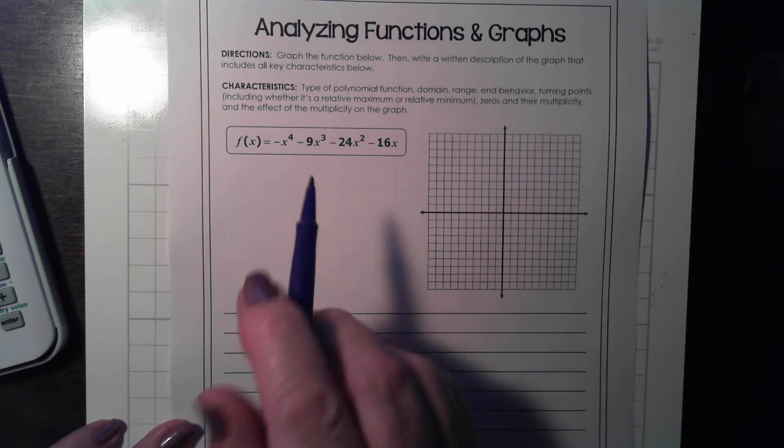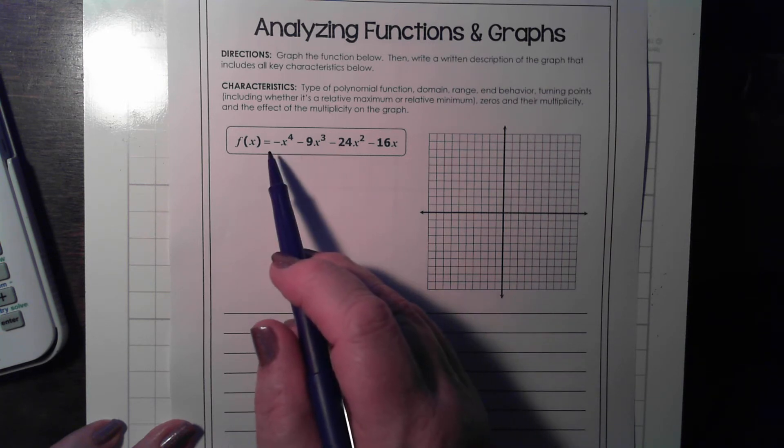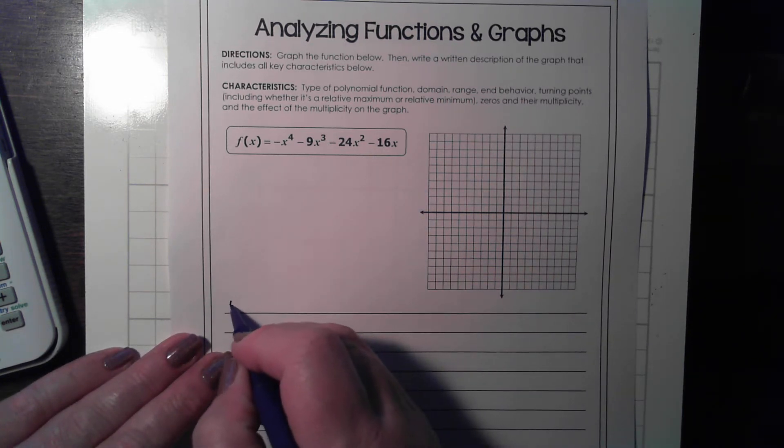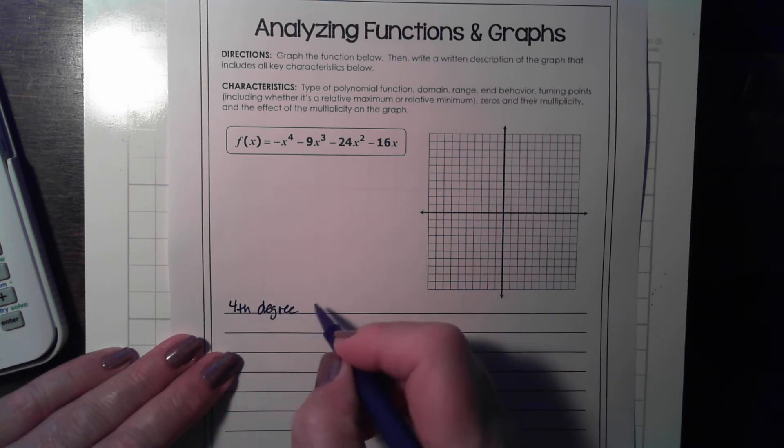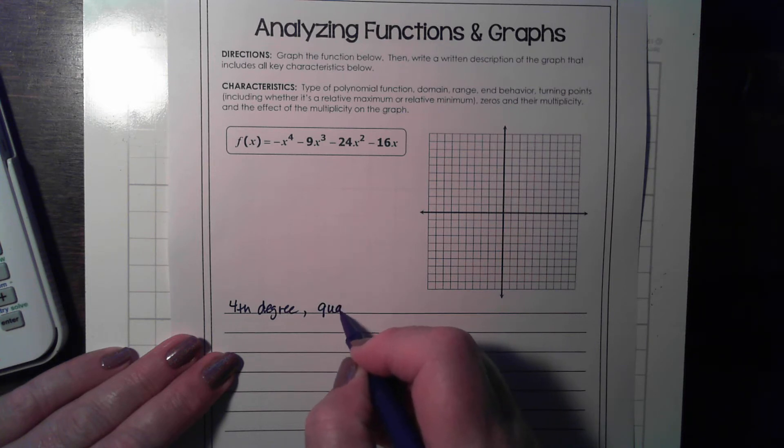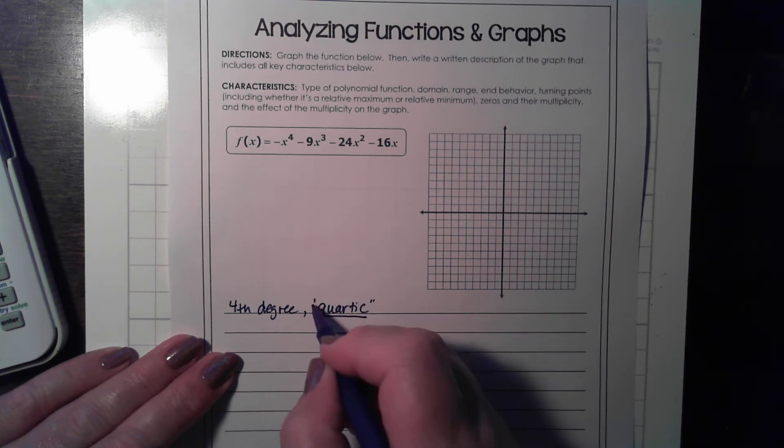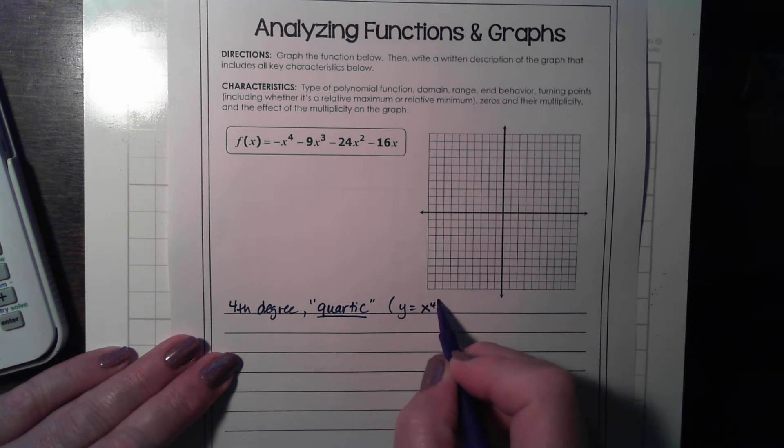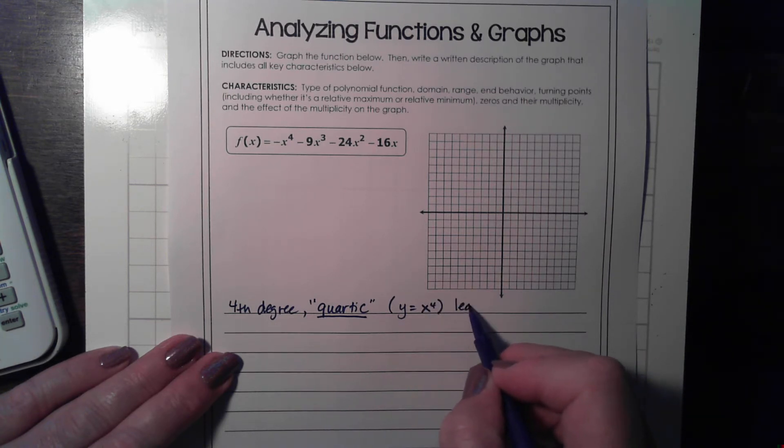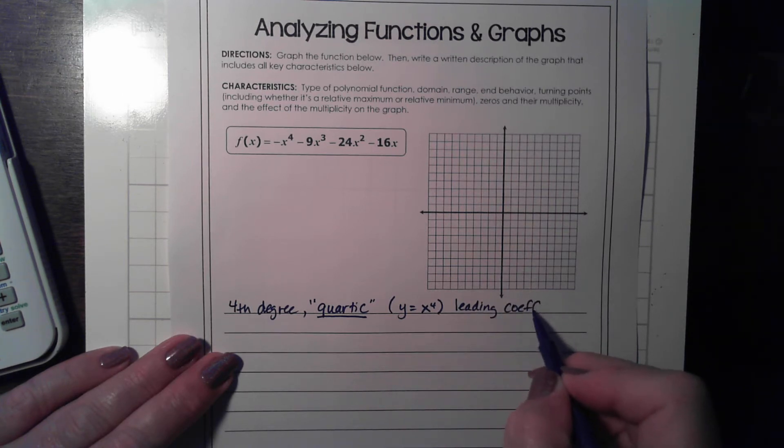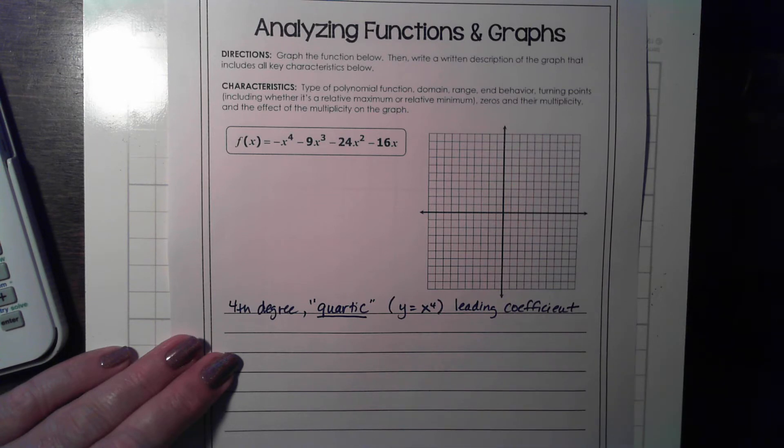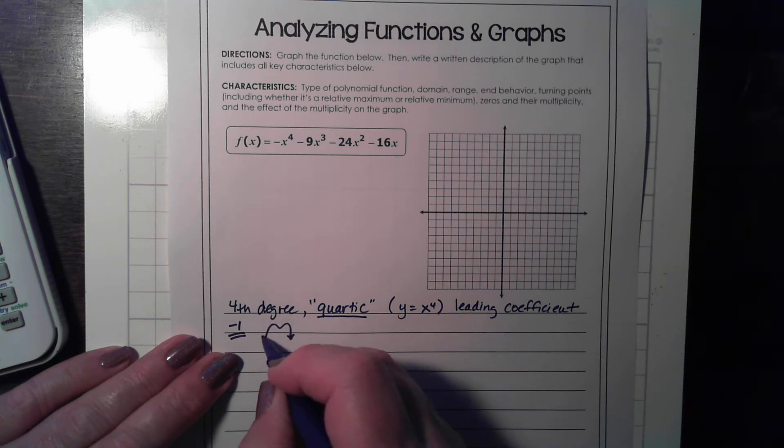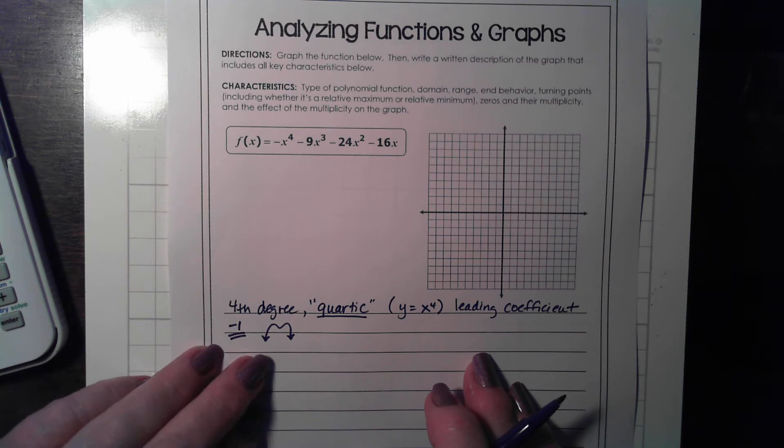For this problem, we want to look at the key features, and some of the key features are, first of all, what's the parent function? We can see that this is a polynomial of fourth degree, so it's a fourth degree, also known as quartic. It's okay if you don't have all these names down, but fourth degree is important, meaning the parent function is y equals x to the fourth. But the leading term coefficient has a coefficient of negative one.